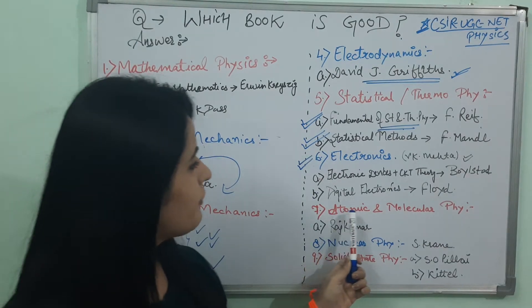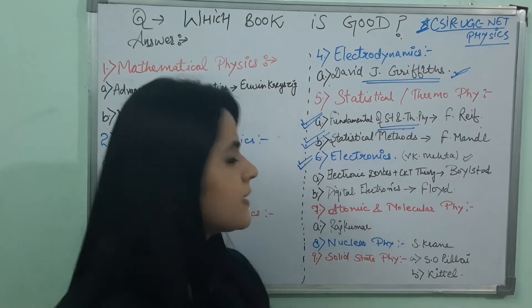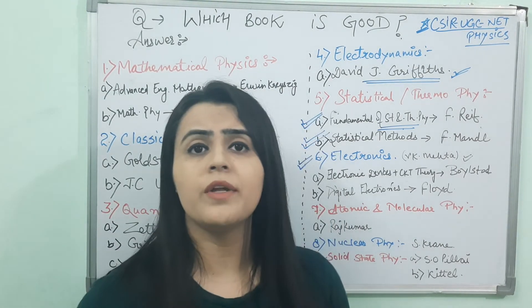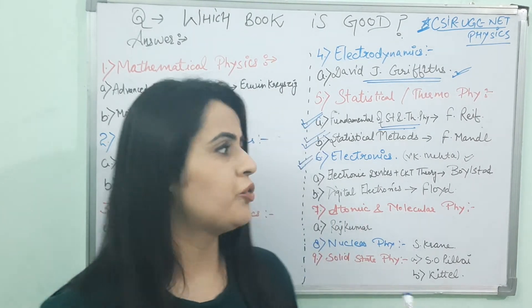And for next, the seventh book is Atomic and Molecular Physics. I refer Rajkumar. Rajkumar covers a very good question, very good theory part, very good numerical approach. I refer you this book.